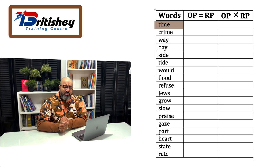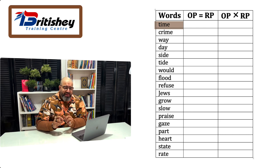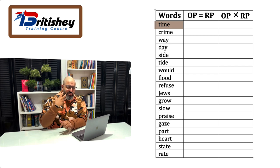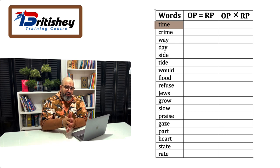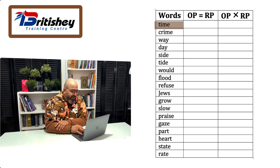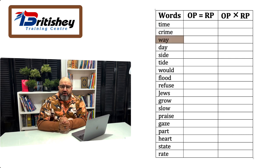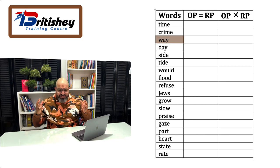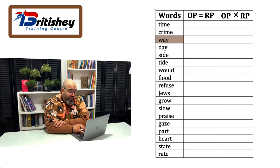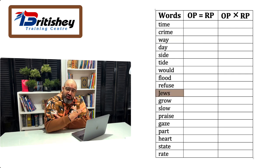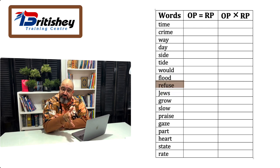Students will listen to me say, for example, 'time' — and notice that in OP I say 'toime,' not 'time.' So that's different. That is what I call self-directed discovery. They check with friends. They find, for example, that 'where' is different — in modern English we say 'way' but in OP it's 'where.' Then they'll find similar ones — 'Jews' sounds the same in OP as in RP, and 'refused' is the same too.